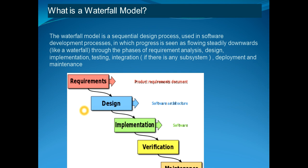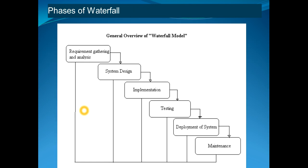The next phase cannot start until the previous phase is finished. The phases of the waterfall model are as follows. The first is requirement gathering and analysis. In this phase, the vendor sits with the customer and studies the objectives and requirements of the customer. The main deliverable of this phase is a specification document.